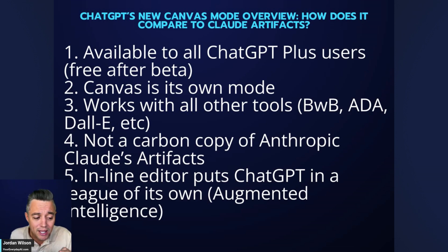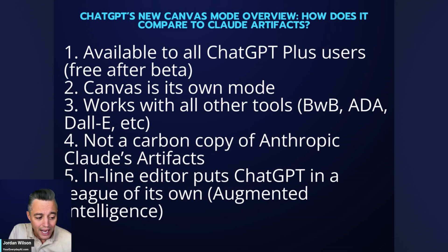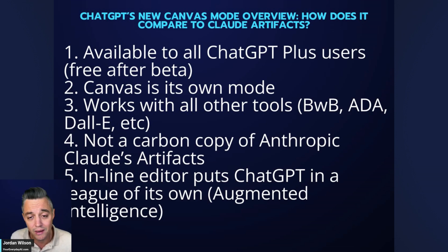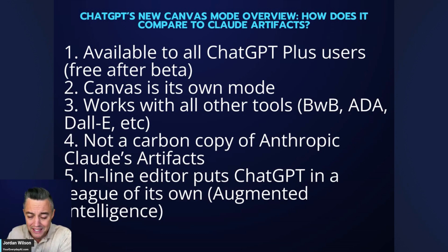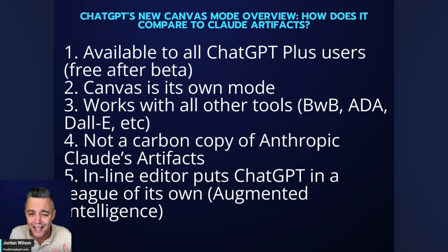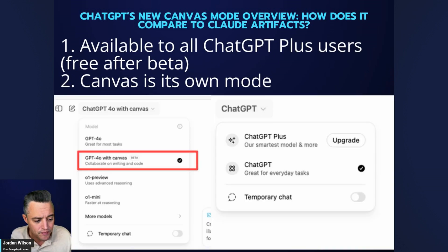Number four: Canvas is not a carbon copy of Anthropic Claude's Artifacts — very different, actually. And number five: Canvas is an inline editor, which I think puts ChatGPT in a league of its own and is going to kill a lot of GPT wrappers that are still around. The ability to edit a document with ChatGPT directly in the body of the document was one of the biggest advantages of those AI writing tools that were essentially just GPT wrappers.